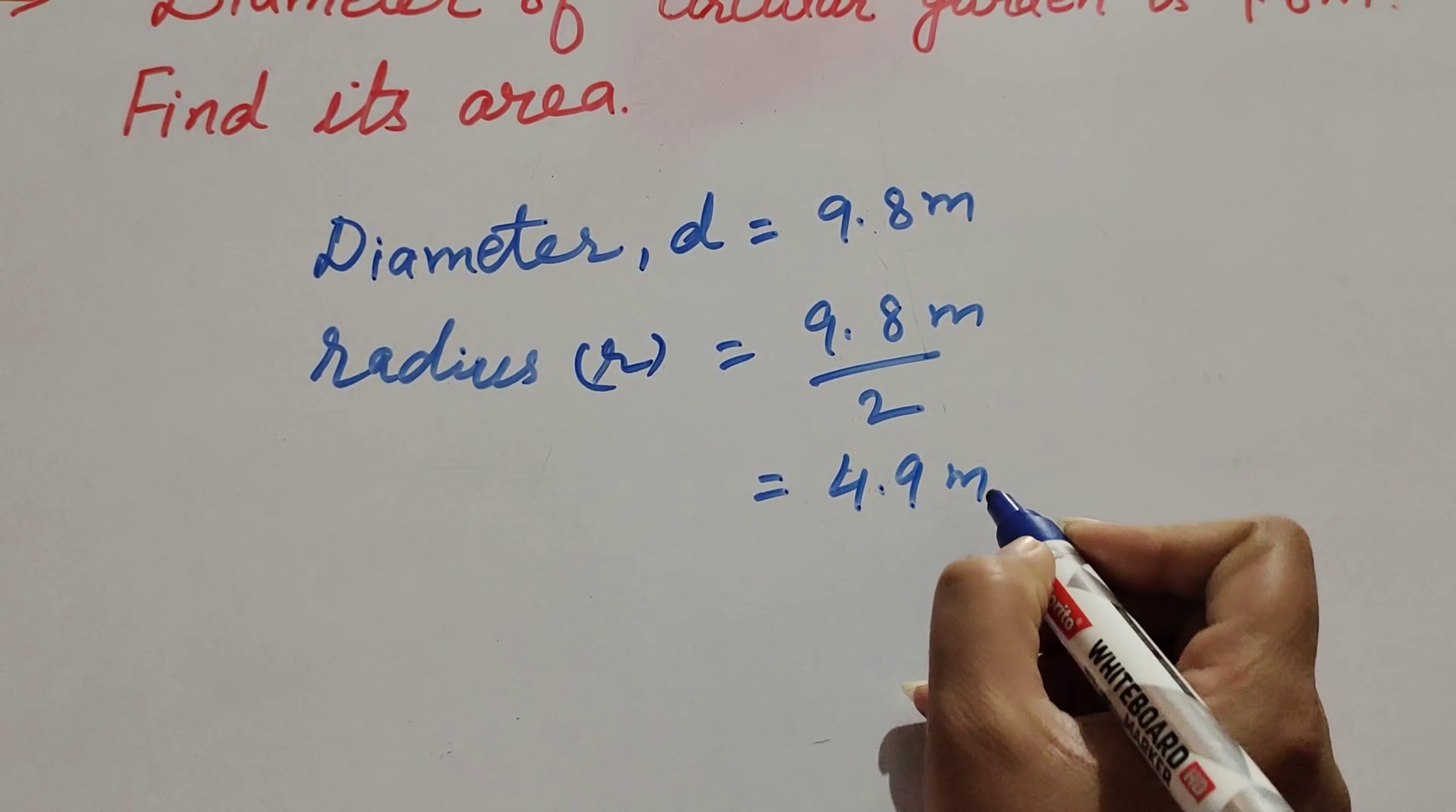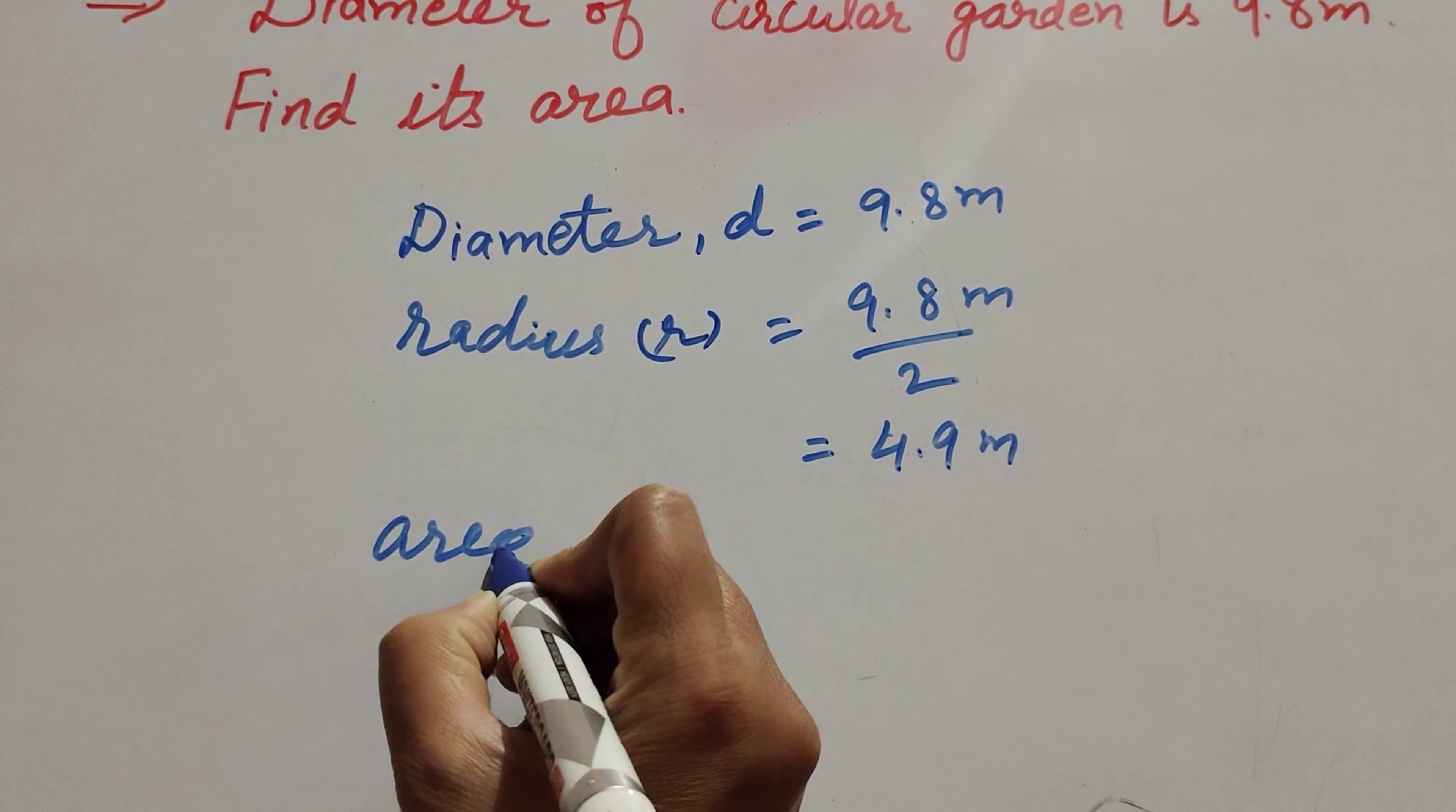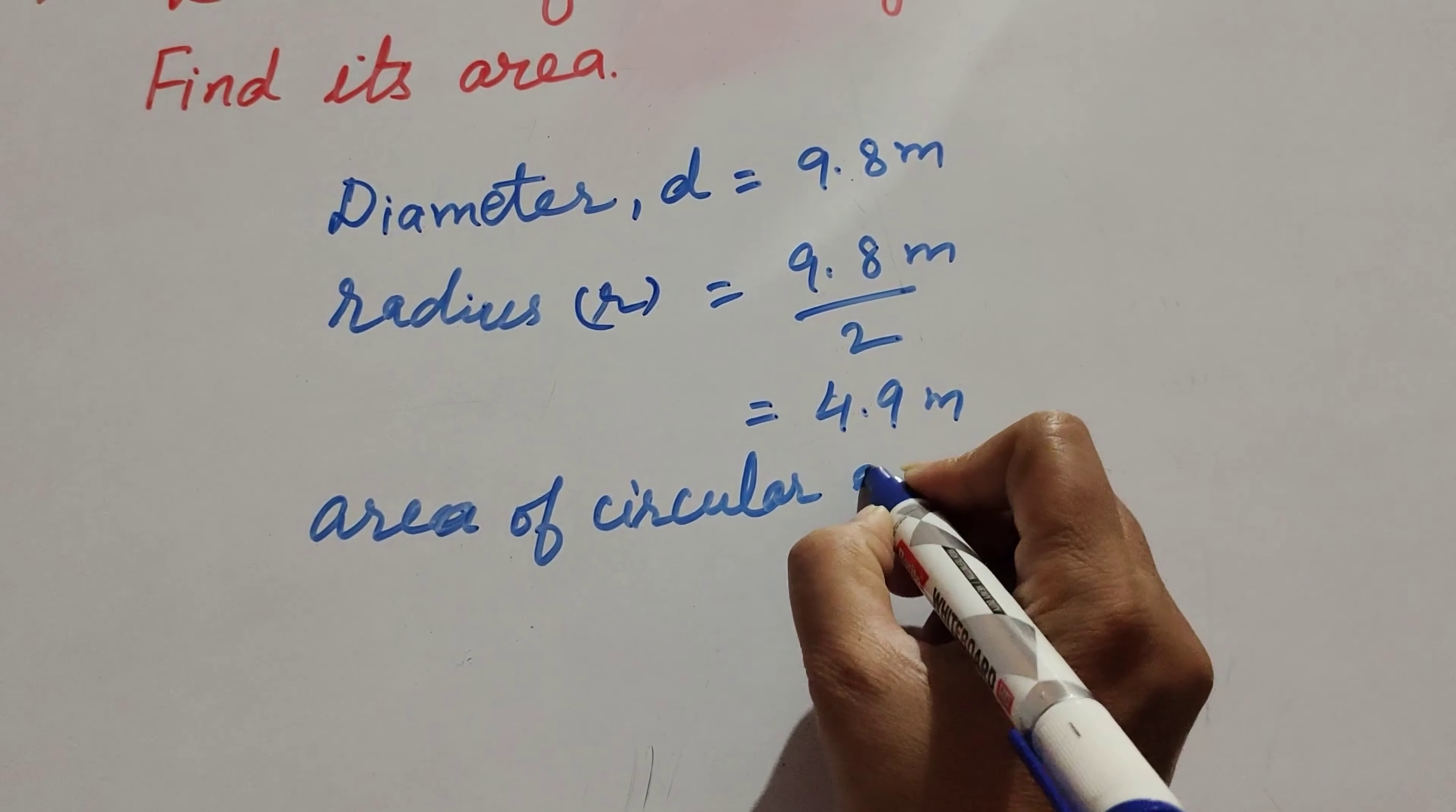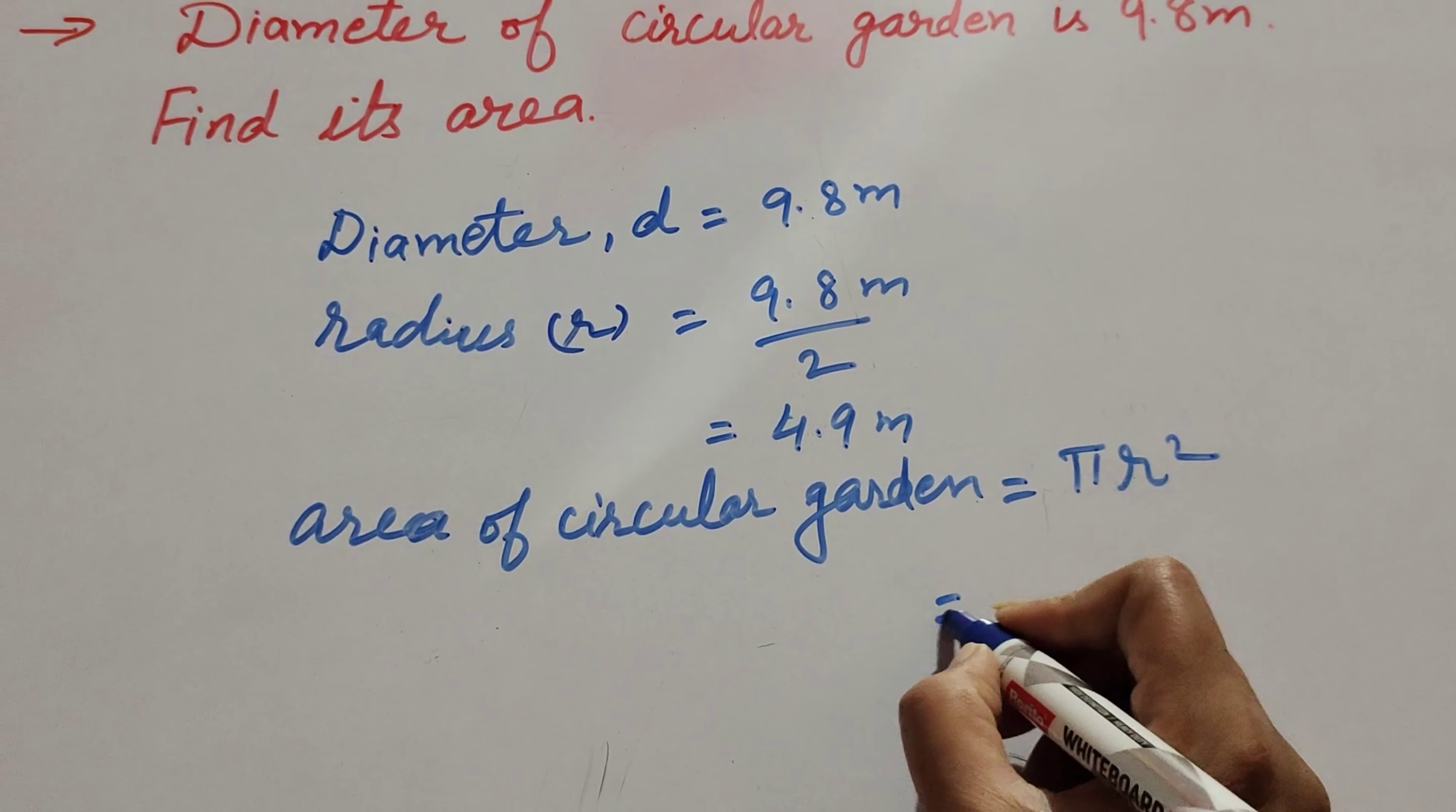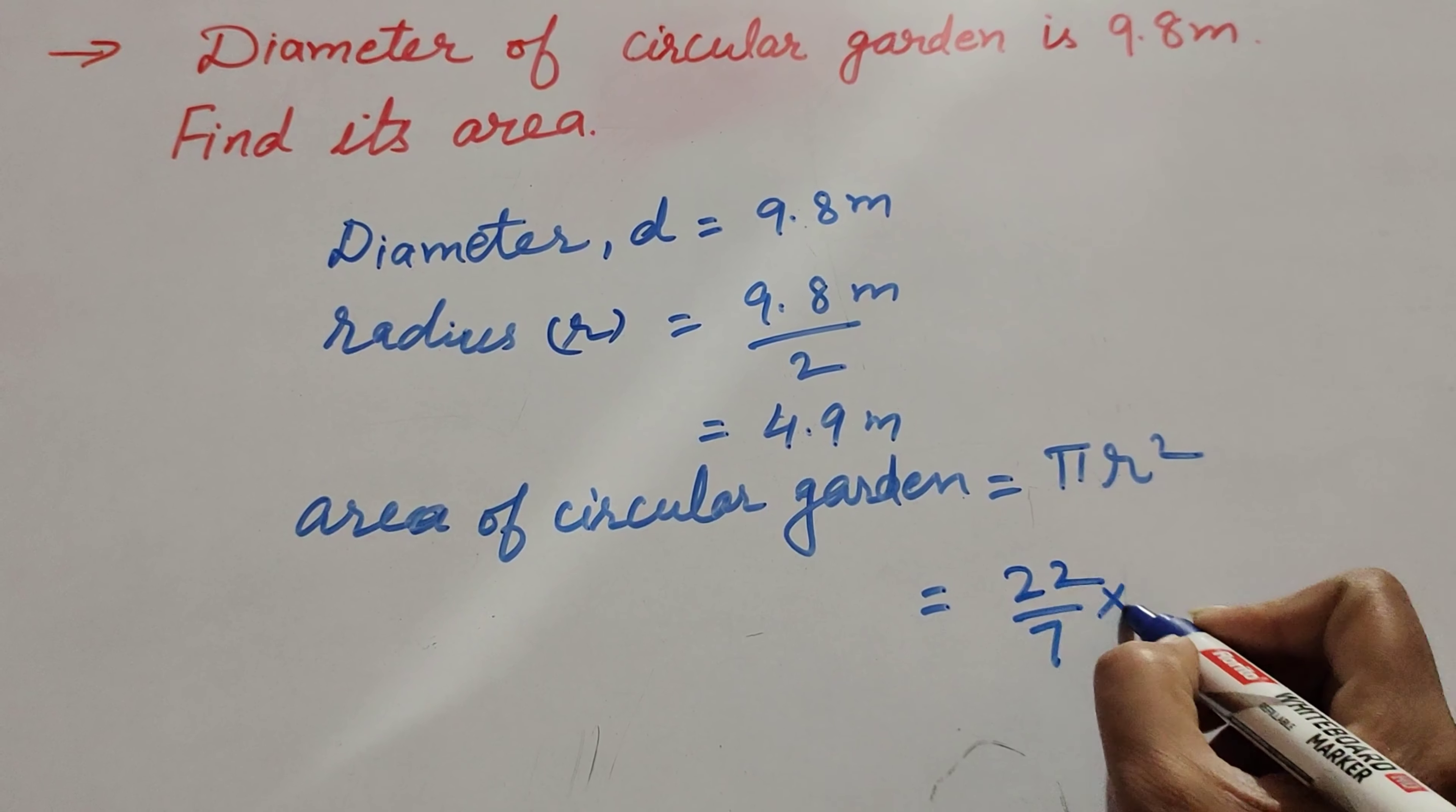So the radius of the circular garden is 4.9 meters. Now we find its area. Area of circular garden equals πr². The value of π is the constant 22/7, and r² is the radius squared.